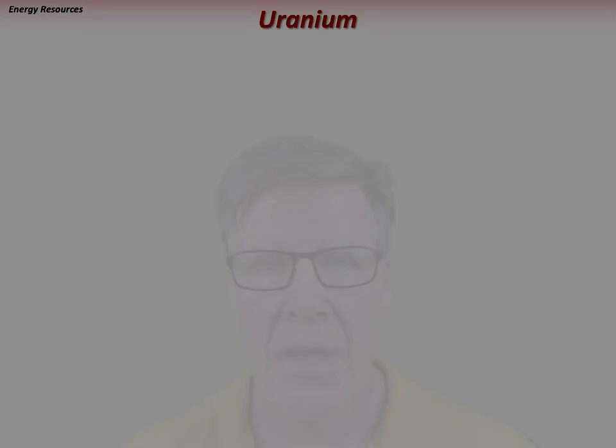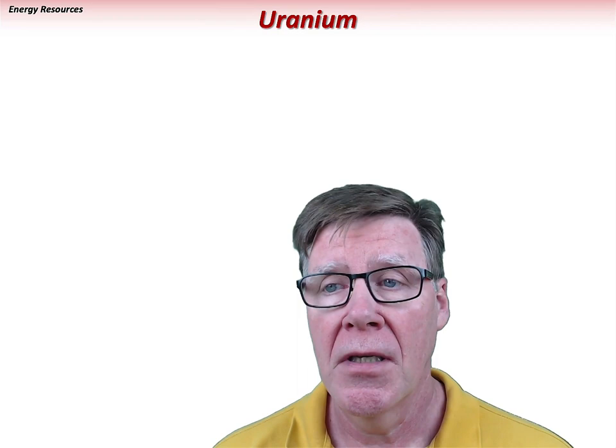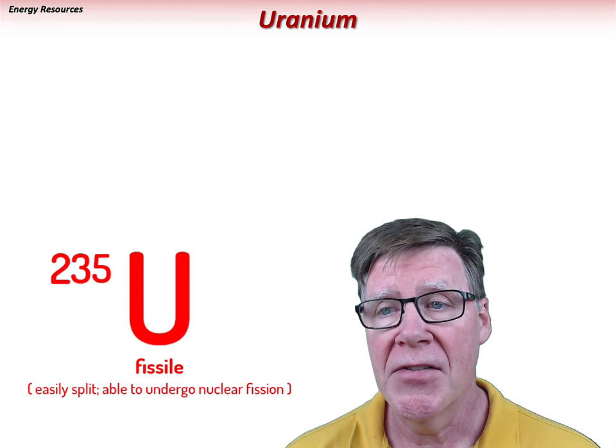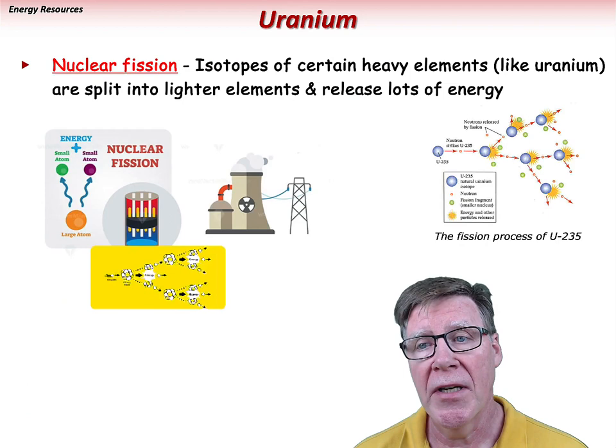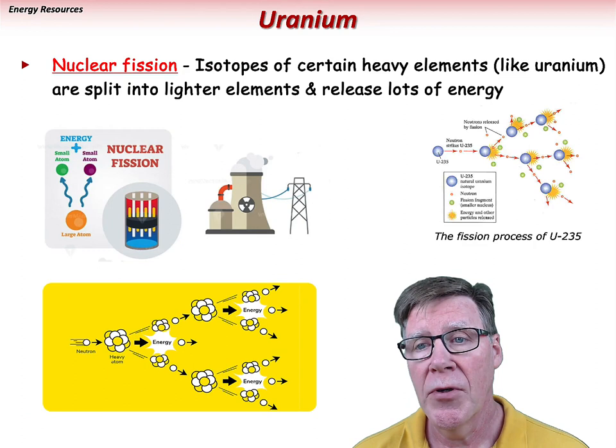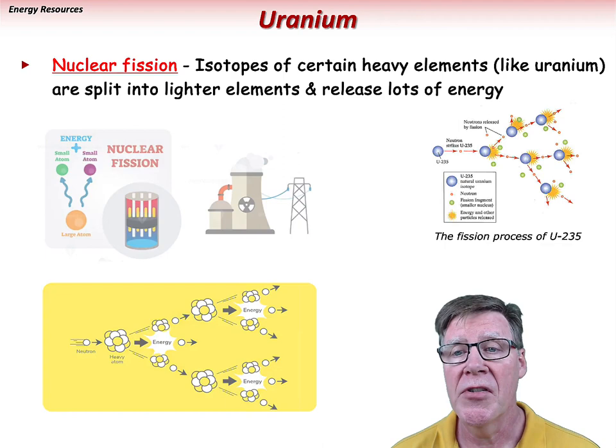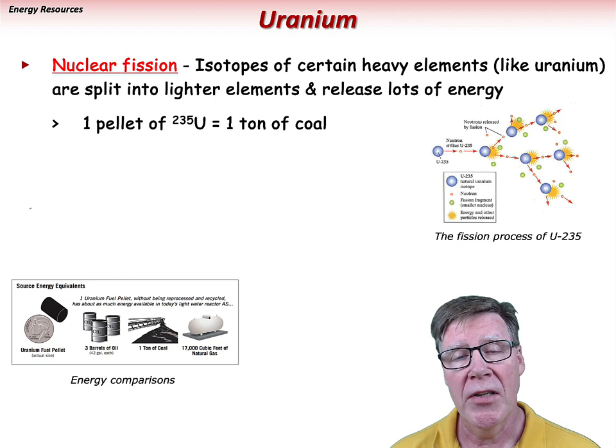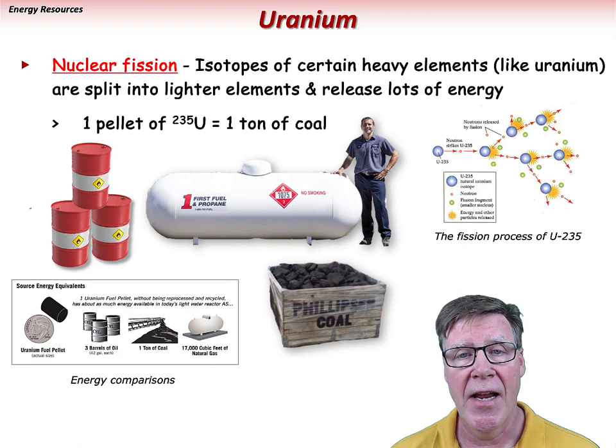Uranium is a radioactive element with several isotopes, but uranium-235 is the only fissile isotope, meaning it can sustain a nuclear fission reaction. Nuclear fission involves the splitting of heavy isotopes like uranium-235 into lighter elements, releasing a tremendous amount of energy. Nuclear fission of a dime-sized pellet of uranium-235 is the energy equivalent to burning three barrels of oil, one ton of coal, or 17,000 cubic feet of natural gas — which is why nuclear power is typically a resource of choice for countries with the technical means to build and maintain nuclear power plants.